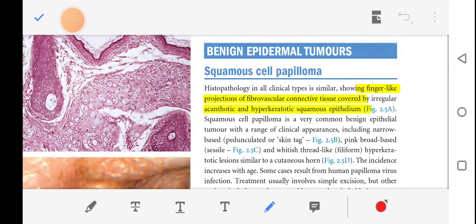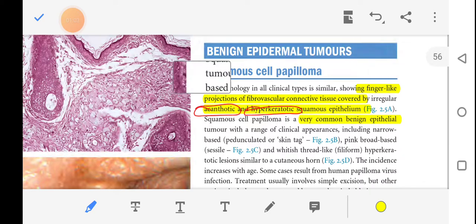Acanthosis, we have read that it is the thickening of the prickle layer. Hyperkeratosis is thickening of the keratin layer or the topmost layer. So it shows finger-like projections of fibrovascular connective tissue and it is covered by acanthotic and hyperkeratotic squamous epithelium. This is a very common benign epithelial tumor with a range of clinical appearances.